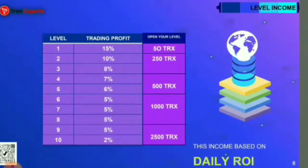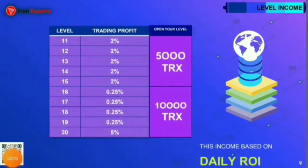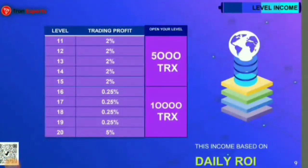Joining with 500 TRX opens the first 5 level income. Joining with 1,000 TRX opens the first 8 levels. Joining with 2,500 TRX opens the first 10 levels. Joining with 5,000 TRX opens up to 15 levels. Joining with 10,000 TRX opens the first 20 level income.